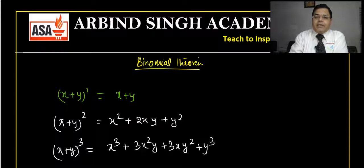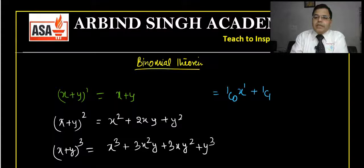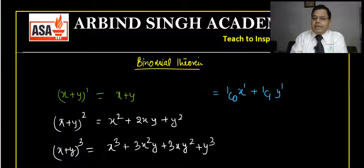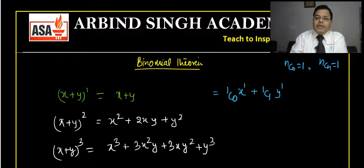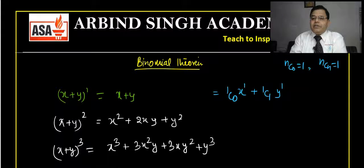Further, these can be written using combination notation. For x plus y to the power 1, this can be written as 1C0 x to the power 1 plus 1C1 y to the power 1. Because 1C0 is 1 and 1C1 is also 1. Remember, nC0 is 1 and nCn is also 1. So 1C0, 2C0, 3C0 are all 1, and 1C1, 2C2, 3C3 are all 1.